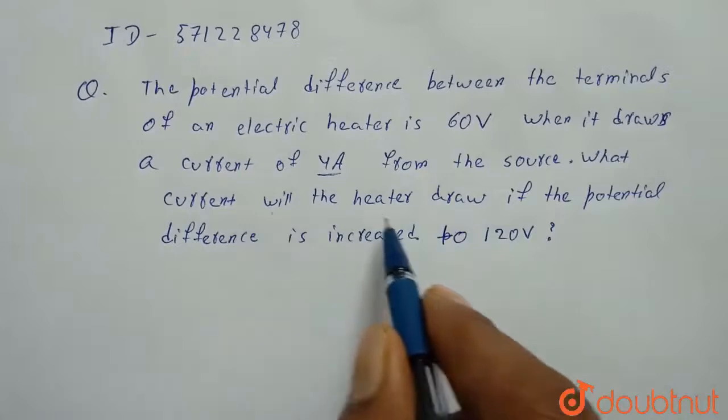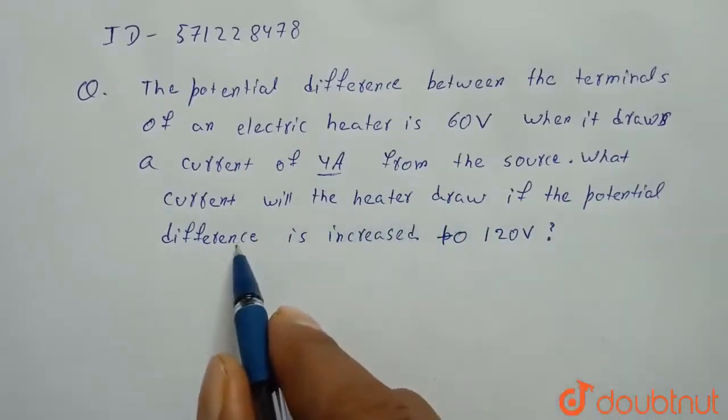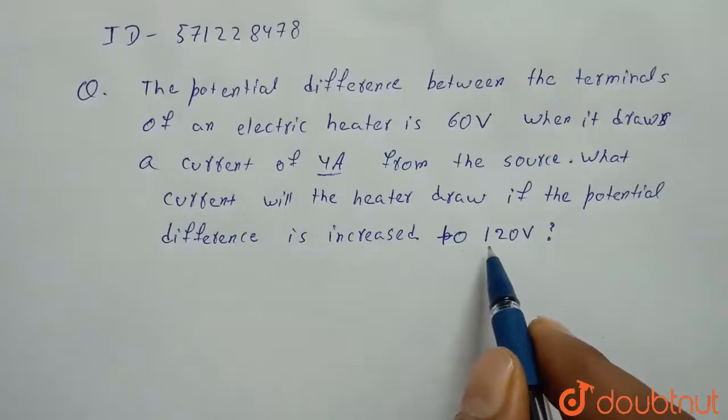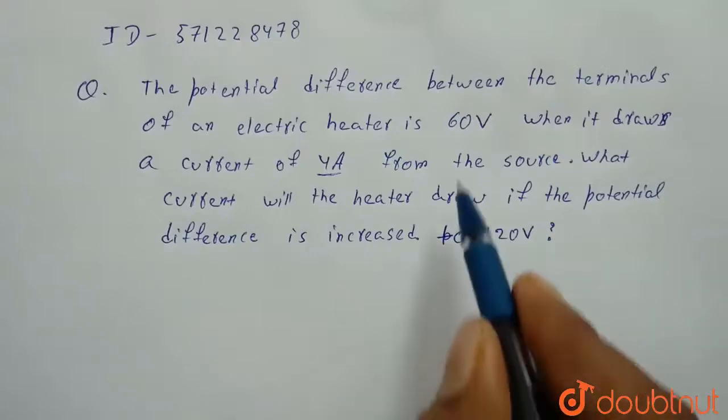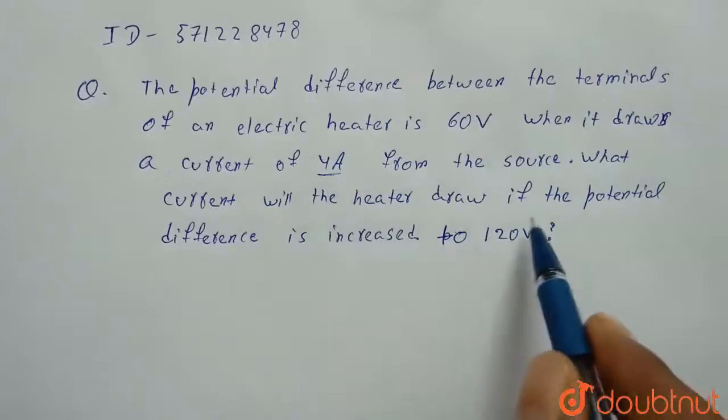What current will the heater draw if the potential difference is increased to 120 volts? Initially, potential difference across it is 60 volts and it draws 4 amperes. So we have to find current drawn if potential difference increased to 120 volts.